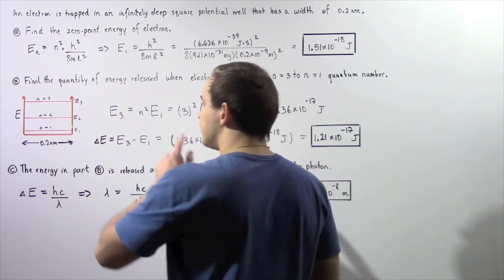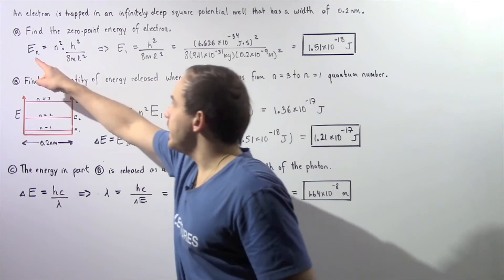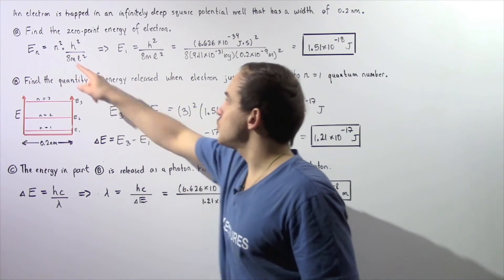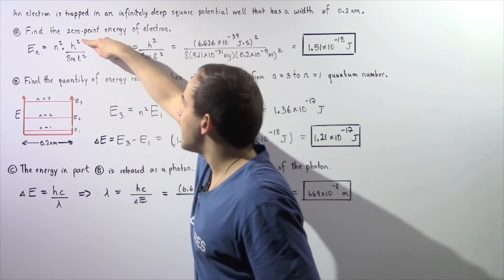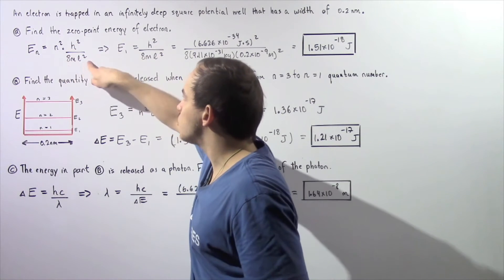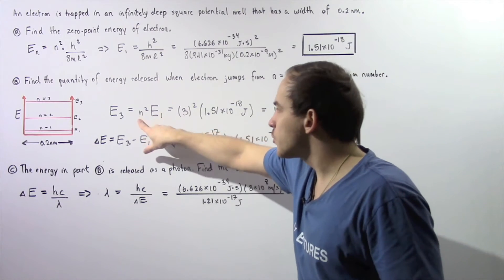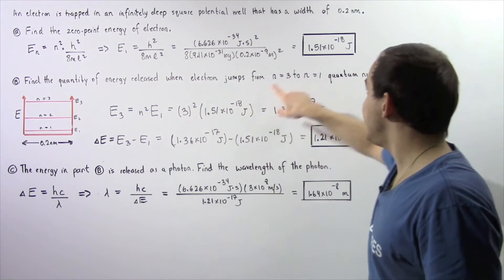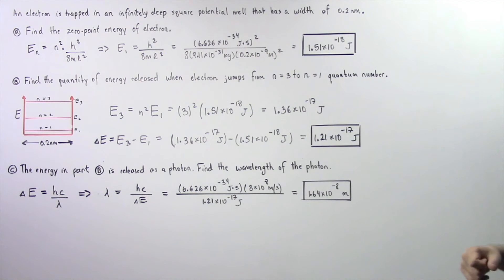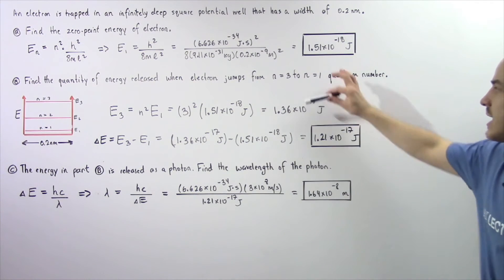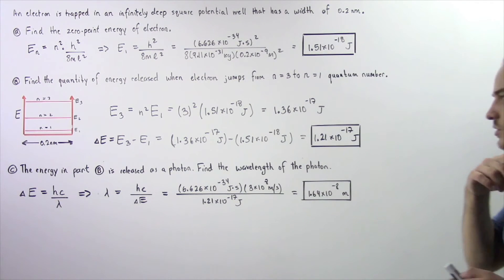Let's begin by calculating E3. E3 is equal to n squared multiplied by this quantity. And this quantity is simply equal to E1. So, 3 squared, which is 9, multiplied by E1, that gives us about 1.36 times 10 to negative 17 joules.